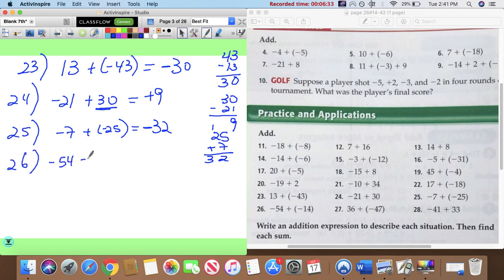Twenty six: negative fifty four plus negative fourteen. Otra vez son amigos. Entonces, va ser negativo. Cincuenta y cuatro y catorce. Fifty four and fourteen gives me sixty eight. Negative sixty eight.